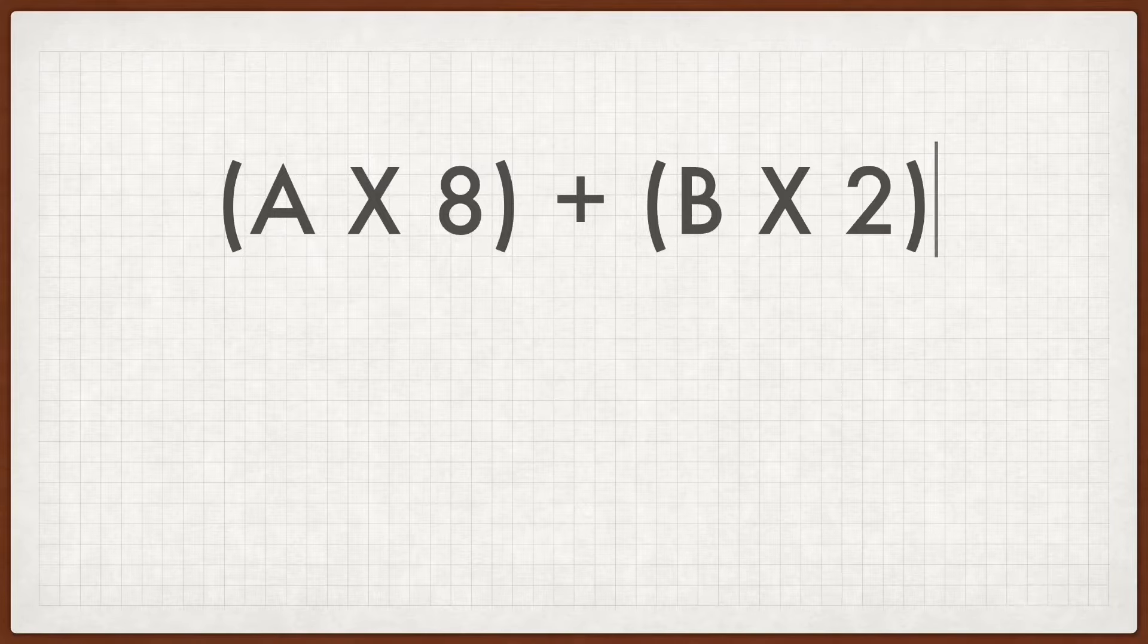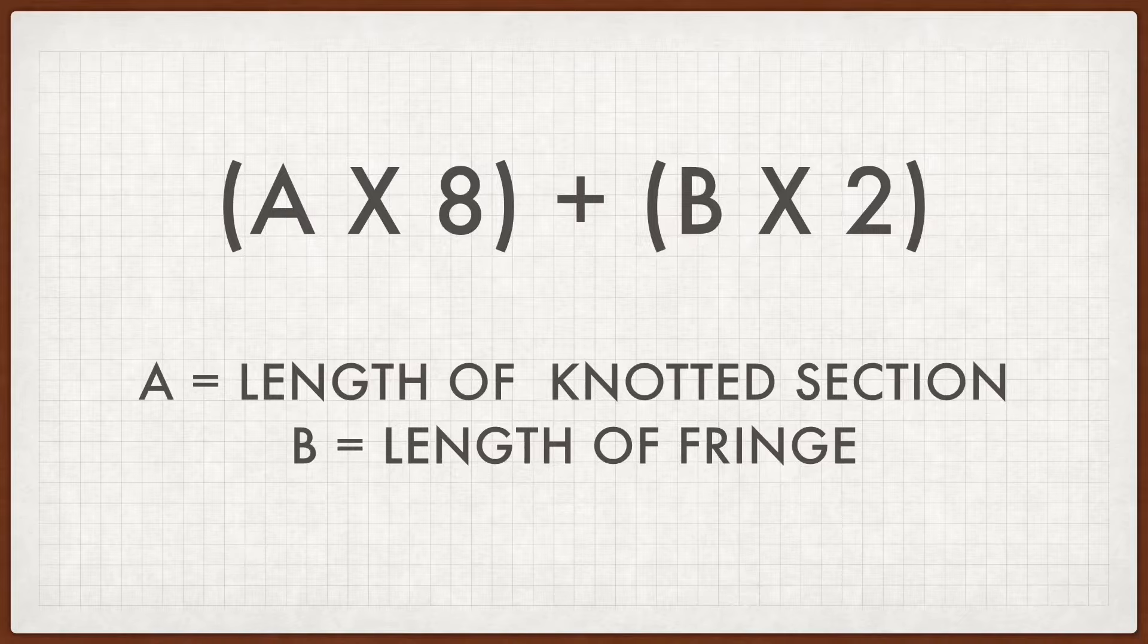I know that sounded probably extremely confusing, so let me share just a little formula that's going to make this easier to understand. That formula is going to be a times eight plus b times two. In that formula, a is going to be the knotted section and b is going to be your fringe. So let's break this down even further so you can understand it a little more clearly.